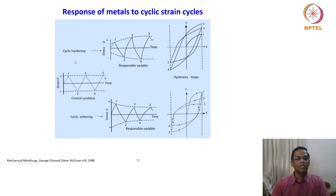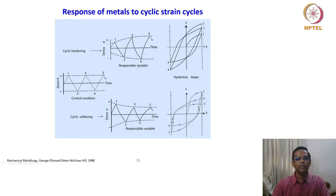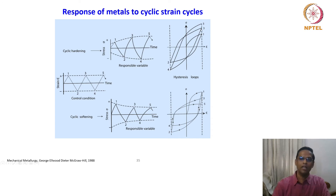In a strain-controlled test using a triangular waveform, during cyclic hardening you observe that as the number of cycles increases, the peak tensile stress increases. In terms of the hysteresis loop, the loop expands progressively — loops 1, 2, 3, 4, 5 — with the edge of the hysteresis loop kept on increasing. This is hardening. Notably, in the strain axis, the hysteresis loop becomes thinner and thinner as it progresses upward.